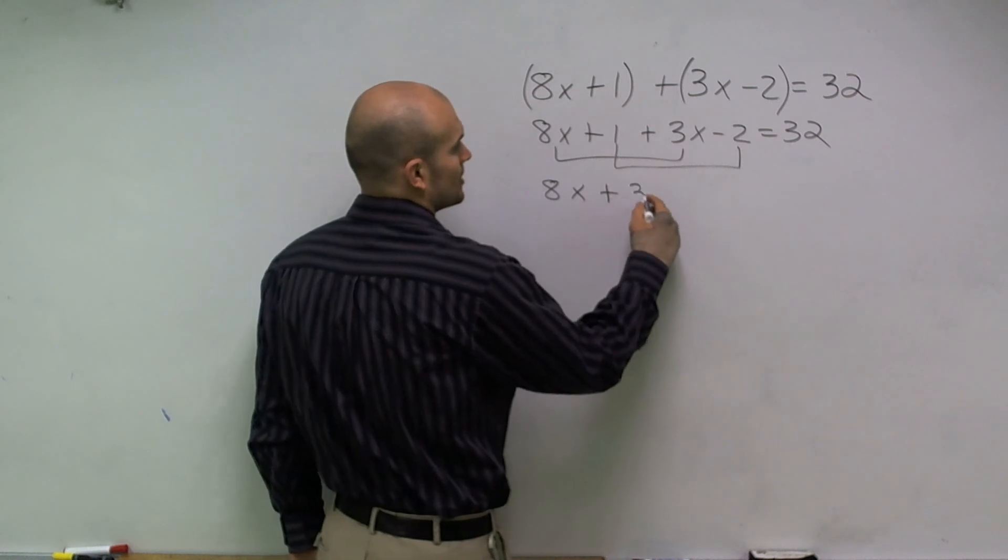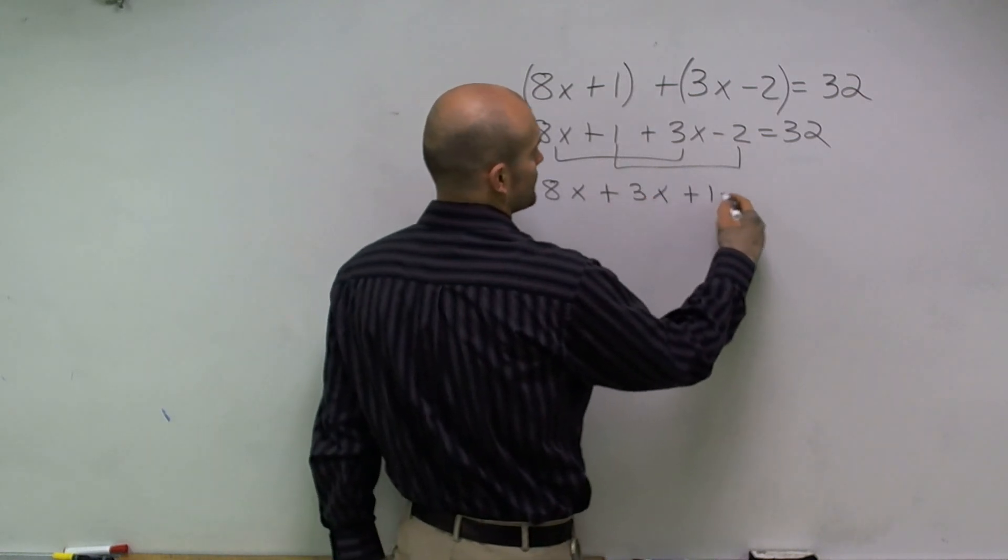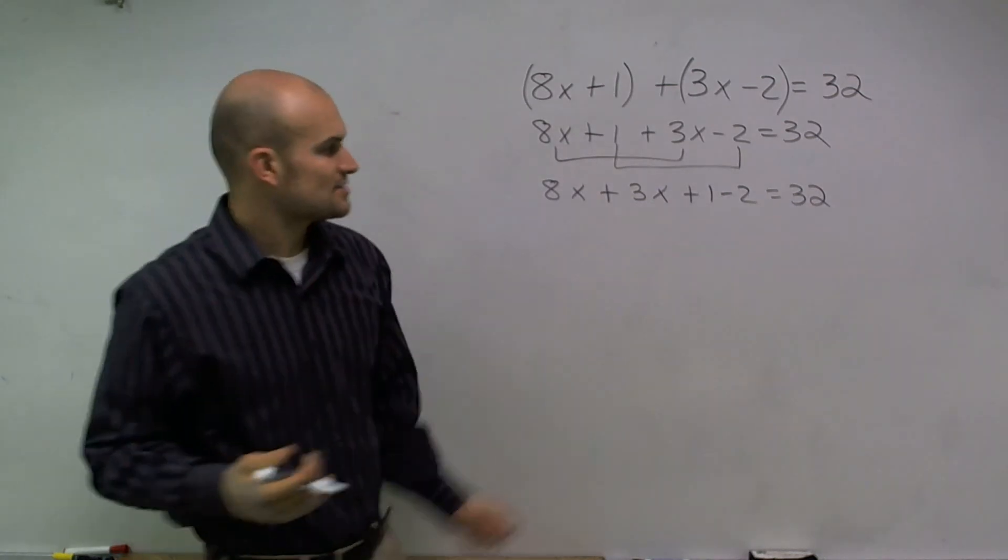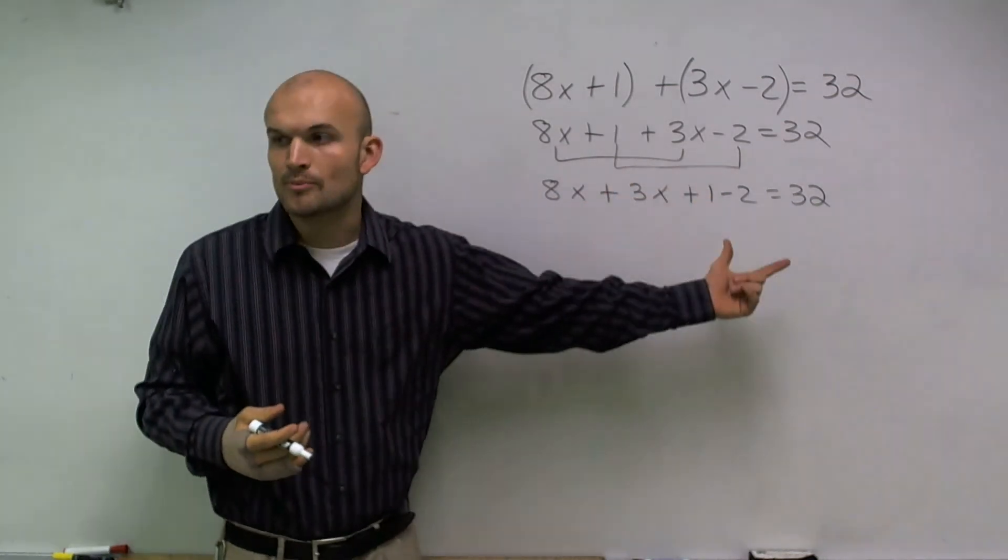So I have 8x plus 3x plus 1 minus 2 equals 32. So by doing this, what I did is now I just grouped my two numbers so they're together.